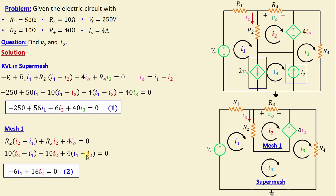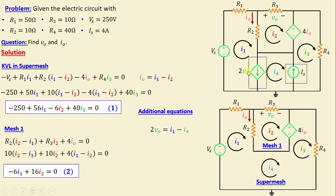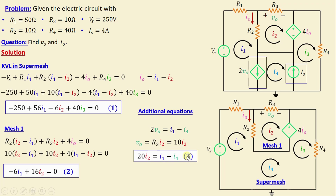We currently have 2 equations with 3 unknowns, so we require additional equations. Focusing on the dependent source 2VO, we write: 2·VO = I1 − I4. By Ohm's law, VO = R3·I2 = 10·I2. Substituting VO, we obtain: 20·I2 = I1 − I4 — this is Equation 3. For the independent current source IS, we have IS = I3 − I4, meaning I3 − I4 = 4 A — this is Equation 4.